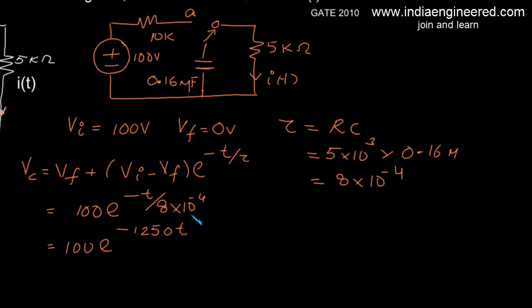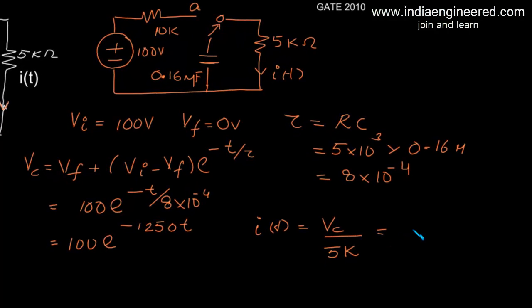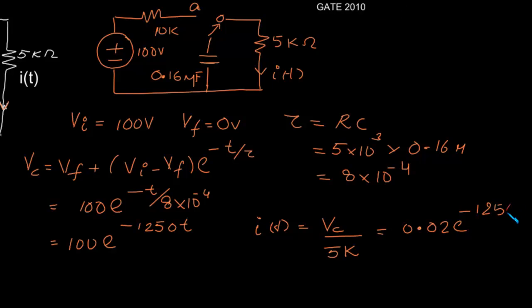Now to find i(t), which is the voltage across the capacitor divided by 5K, that will be 0.02 e to the power of minus 1250t.